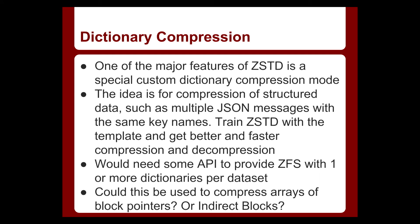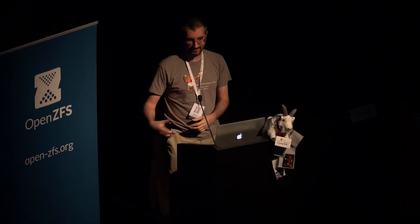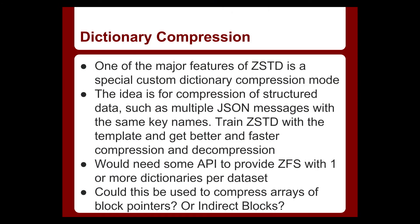One other interesting feature: part of the reason Facebook is so interested in ZStandard is it has a custom dictionary training compression mode. Their main goal is that someday browsers will support ZStandard, and they'll be able to send JSON messages based on the same dictionary but with different content, compressed with a custom dictionary that abstracts out the repeated parts of the data structure. While digging through the ZFS code, I came across a comment: 'XXX, we should have a custom compression algorithm for arrays of block pointers.' I wonder if this would work for that. If we wanted to offer this to end users — to say, here's a dictionary for the types of files I'm going to write into this dataset — what would the ZFS API for loading that dictionary look like, and how would we manage them?